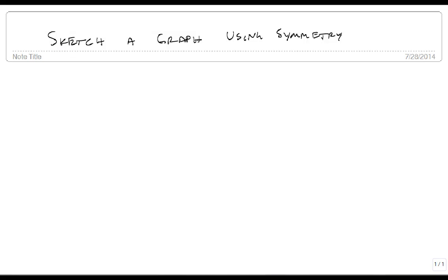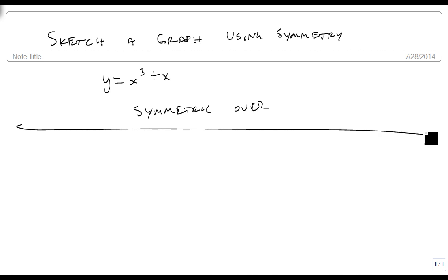Let's use this concept of symmetry to help us sketch a graph now. The way this works is that we first take our equation and decide whether it's symmetric over the y-axis, the x-axis, or the origin. And depending on which one it is, it will help us shape where we go from here.